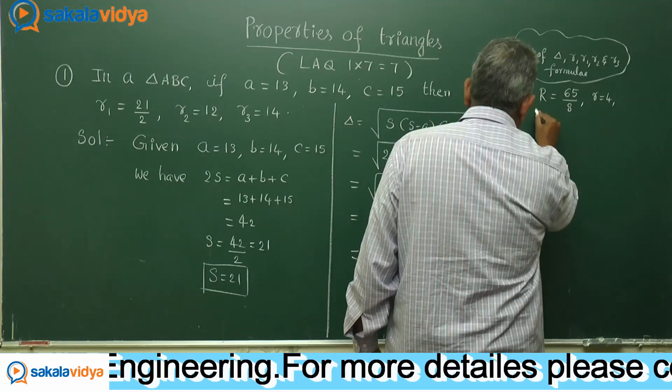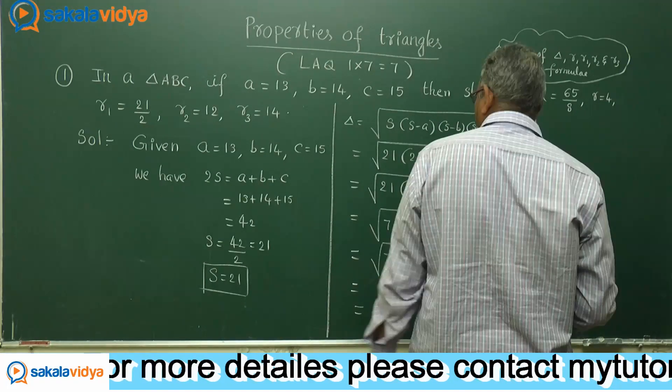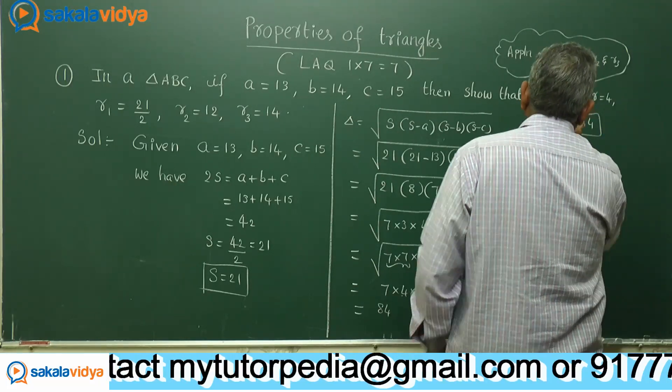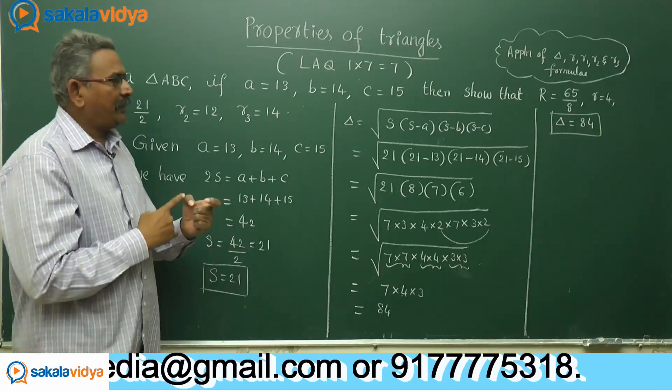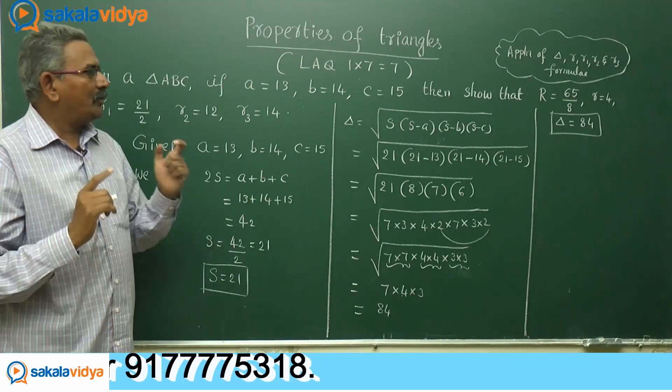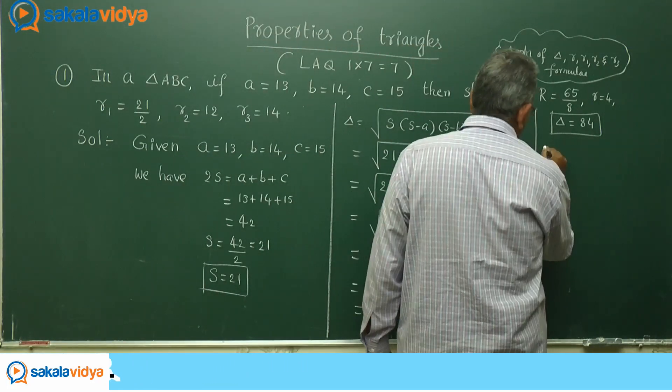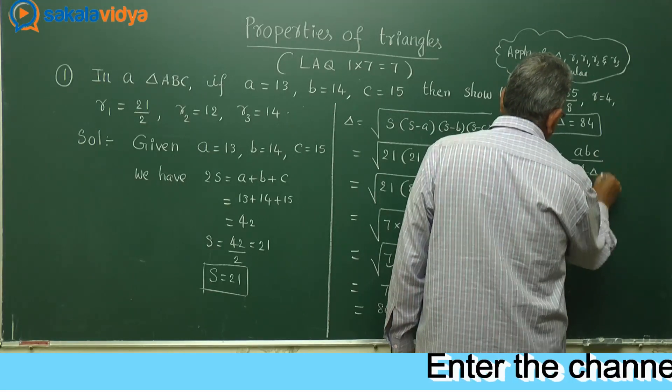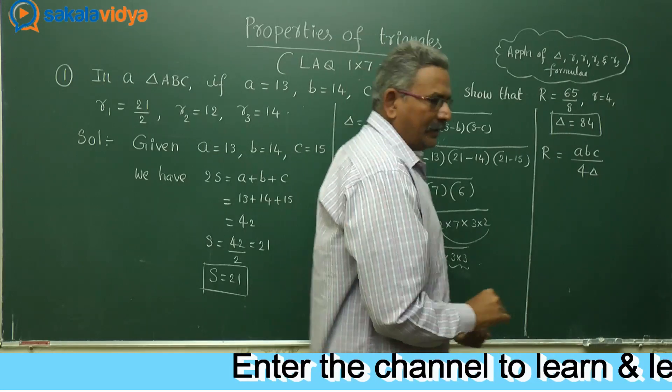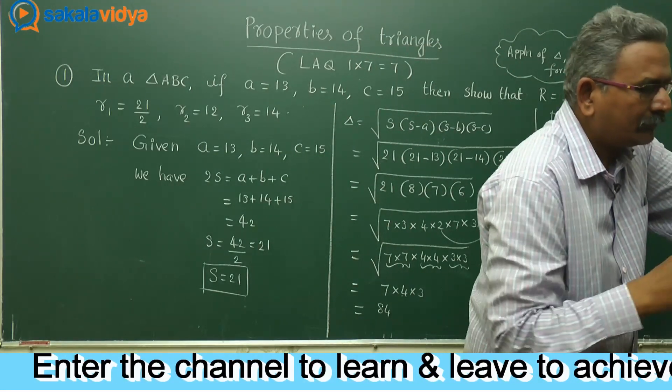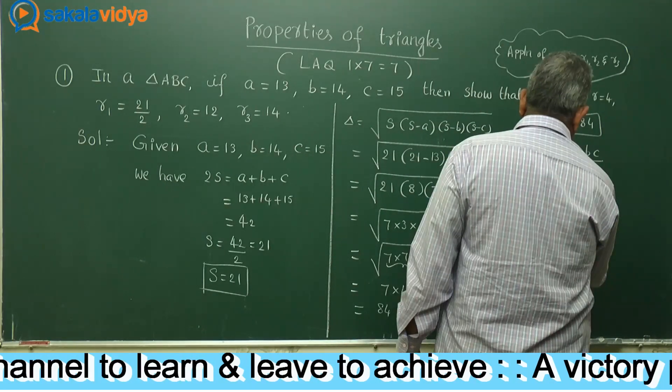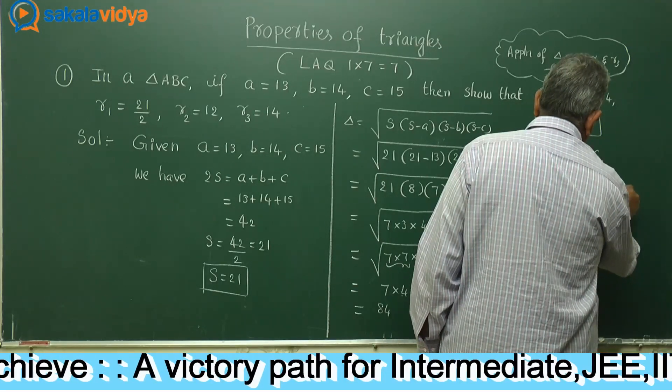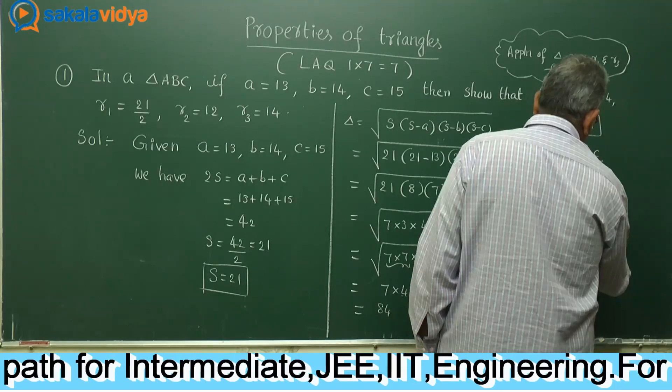Now, as we know the delta value, delta equals to 84. Now we need to find out capital R. Capital R means A, B, C by 4 delta. It is a formula. C, A, B, C. A stands for 13, B, 14, C, 15 divided by 4 times delta is 84. Let it be simplified now.